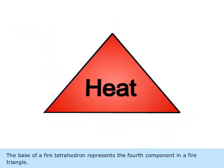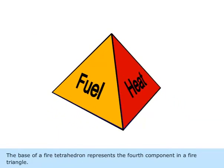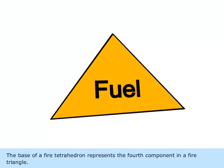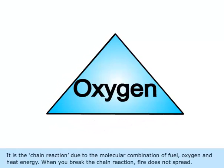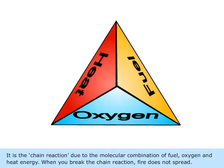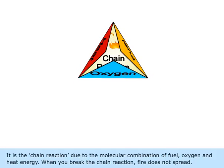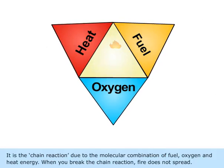The Fire Tetrahedron. The base of a fire tetrahedron represents the fourth component in a fire triangle. It is the chain reaction due to the molecular combination of fuel, oxygen and heat energy. When you break the chain reaction, fire does not spread.